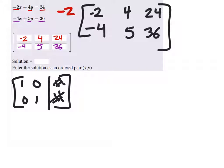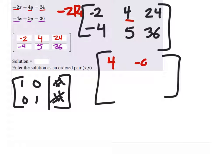So negative 2 times row 1, that gives me a new matrix. And I got 4, negative 2 times 4 is negative 8, negative 2 times 24 is negative 48. And we still got that second row.